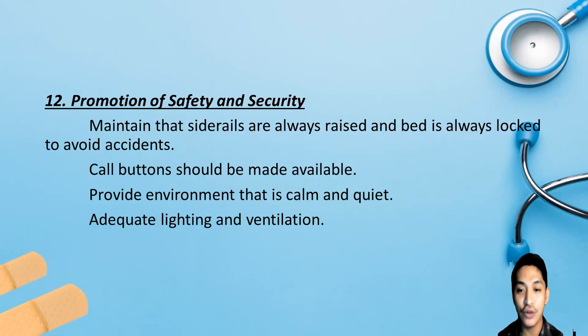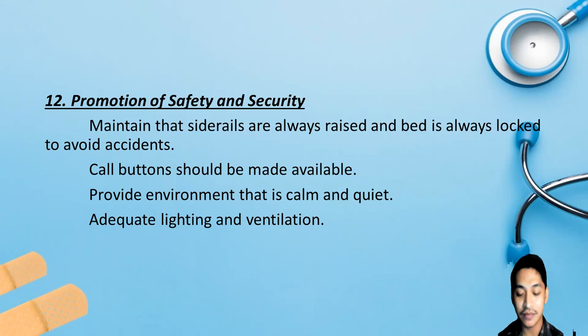The twelfth care essential is promotion of safety and security. Always ensure that side rails are raised and the bed is locked to avoid accidents, regardless of the patient's GCS level. Call buttons should always be available at the patient's bedside. Provide a calm, quiet environment. Ensure adequate lighting and ventilation, and consider the patient's preferences for room temperature.